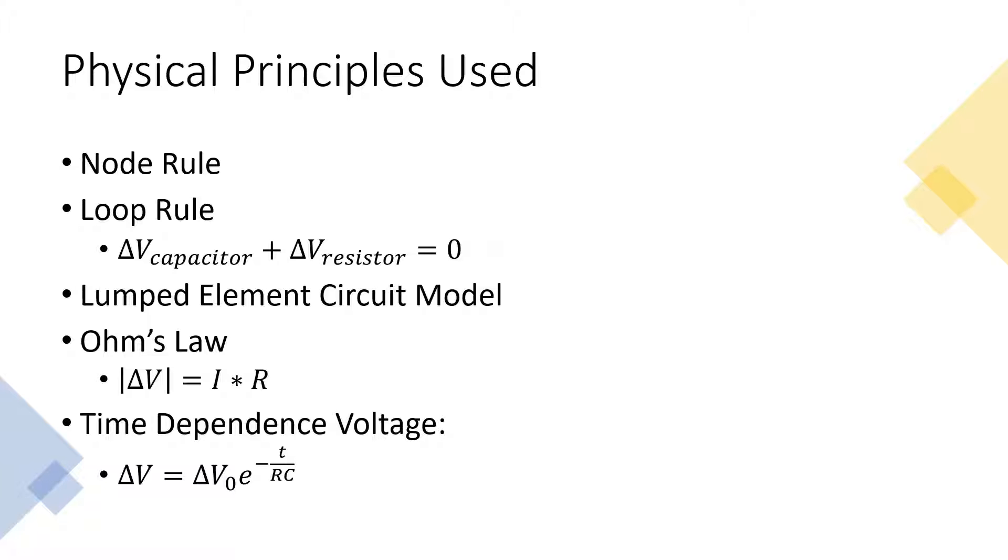Additionally, our simulation uses the lumped element circuit model. The electric potential difference in wires, ammeters, and voltmeters should be quite small, so we assume that they are negligible, since we only care about the significant electric potential differences in batteries, resistors, and light bulbs.